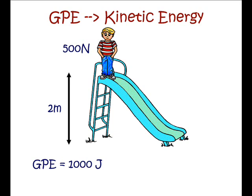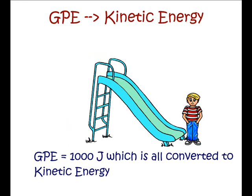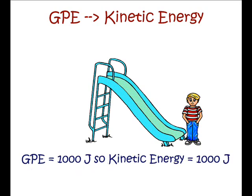He then slides down the slide. As he does this, the GPE is converted to kinetic energy, and by the time he reaches the bottom, we can make an assumption that all of that GPE is converted to kinetic energy. We know, however, there would normally be friction, but in this example, we're going to assume there's no friction.